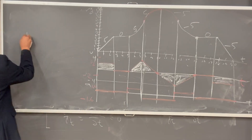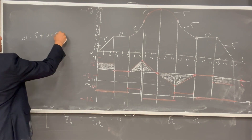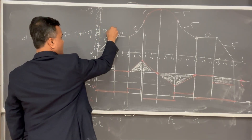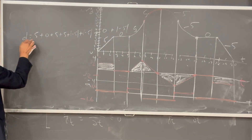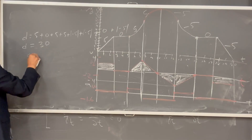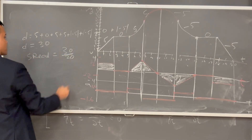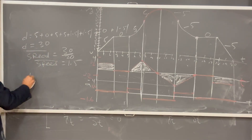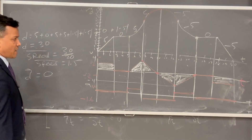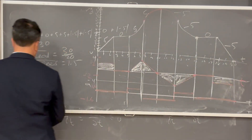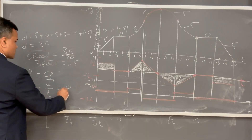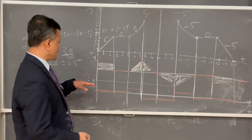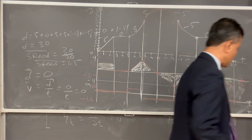Finally, the total distance is 5 + 0 + 5 + 5 + 5 + 5 + 0 + 5 = 30 meters. Average speed = 30 / 20 = 1.5 m/s. Displacement is zero because you return to the starting point, so average velocity = 0 / 20 = 0 m/s. On Friday you'll need to label the y-axis values — that's the only small change I'm making.